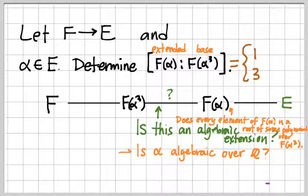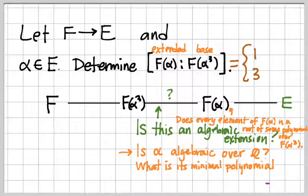So that's why this question is alpha algebraic over q. And if it is, what is its minimal polynomial? Daniel, you mentioned a possibility. Sorry, I didn't mean q here. I meant f adjoin alpha cubed. Sorry.